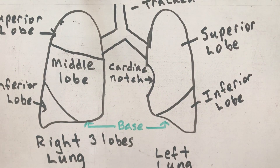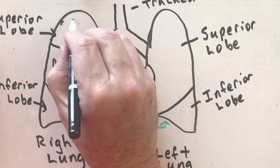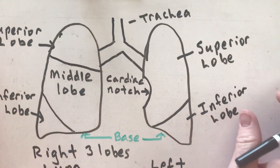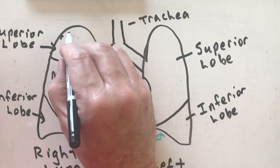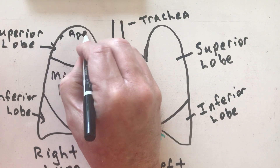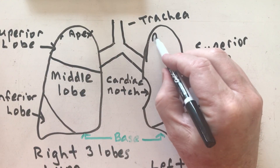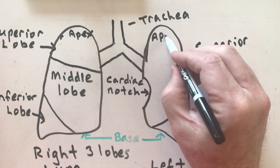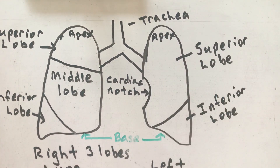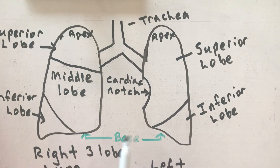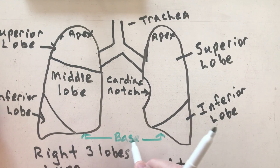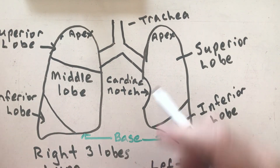At the top of each lung I have an apex. The apex actually goes all the way up by the collarbone. So down here I have the base, and up here I have an apex on each one.